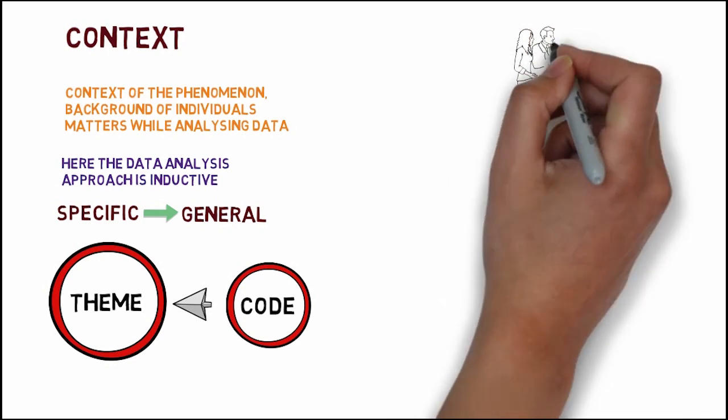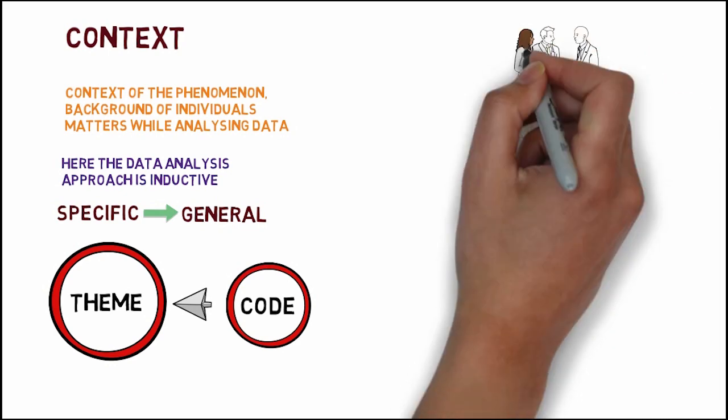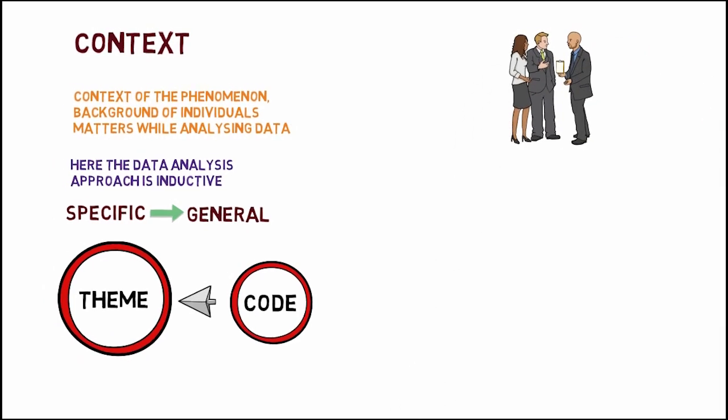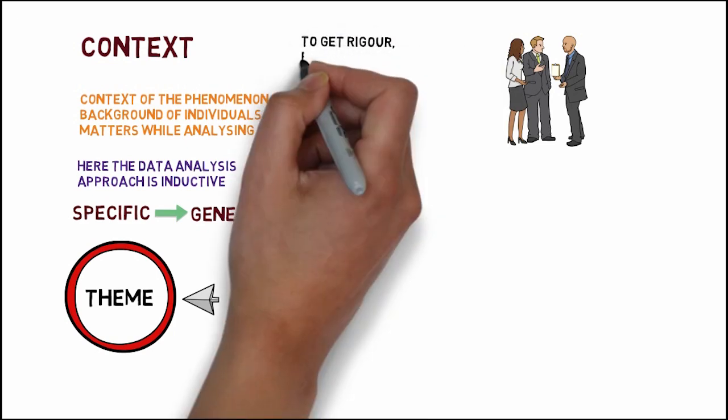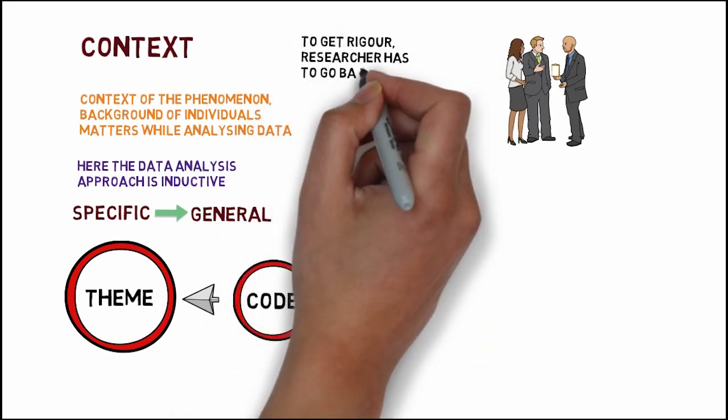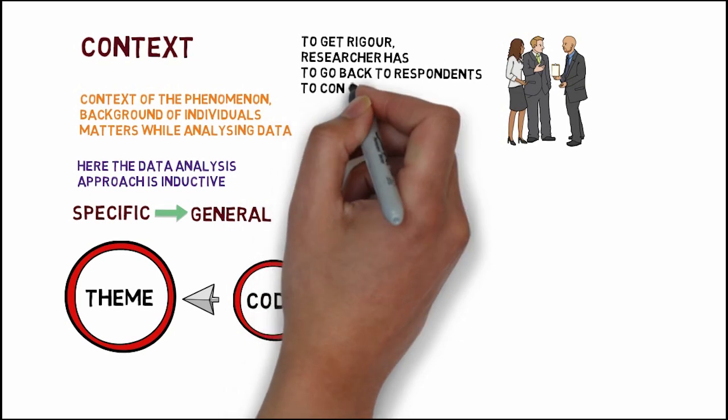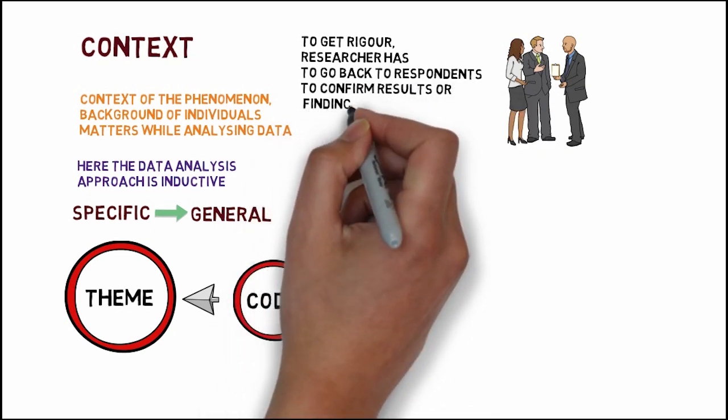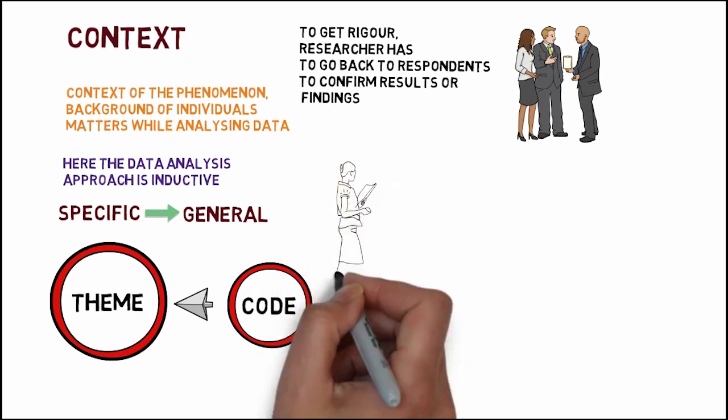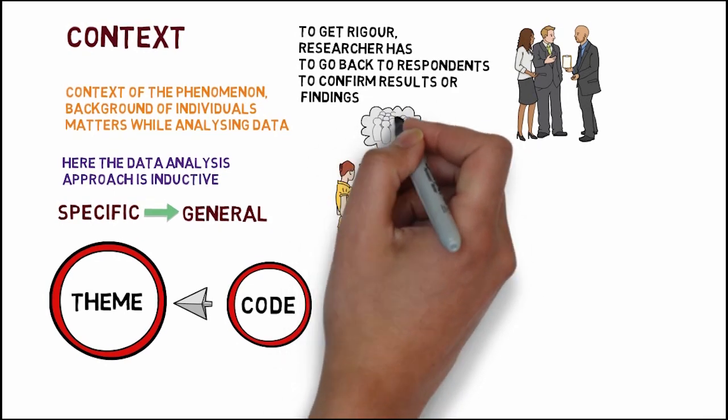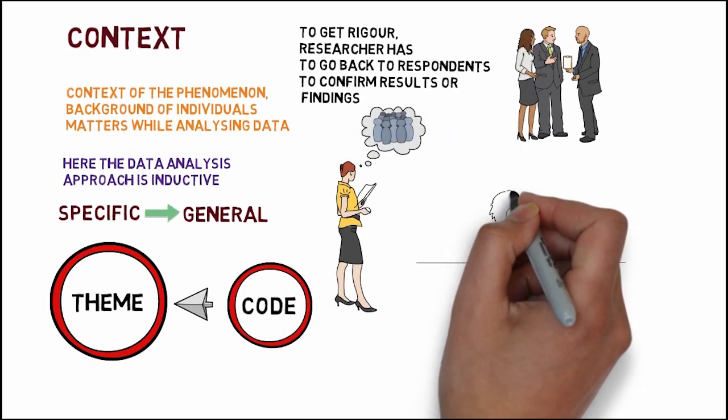Dear students, in qualitative research, the findings can be negotiated with respondents. This means to get rigour, researcher has to go back to respondents to confirm results or findings from the field. Here, the researcher's role is to understand the human understandings on experiences.